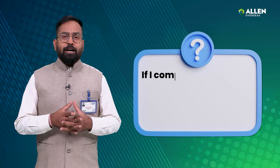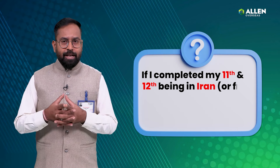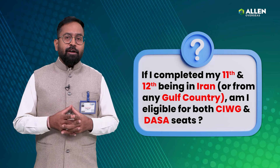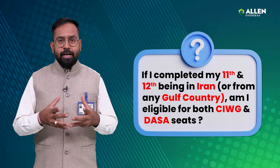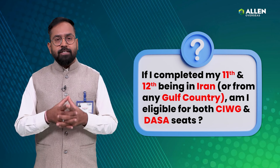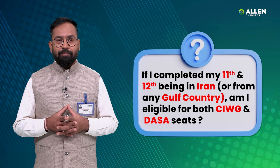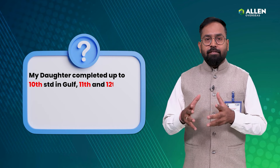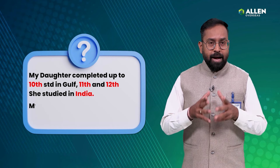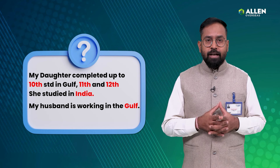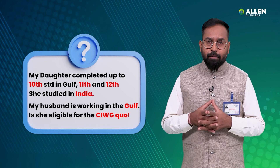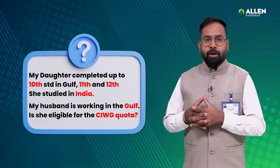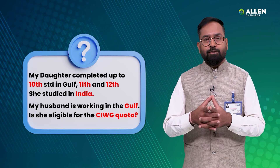Next question: I completed my 11th and 12th in Iran — am I eligible for both CIWG and DASA seats? If you have completed your 11th and 12th in Iran, you are eligible for both CIWG and DASA seats under the DASA scheme. Another question: my daughter completed up to 10th standard in the Gulf and 11th and 12th in India; my husband is working in one of the Gulf countries — is she eligible for the CIWG quota? As she has not completed her 11th and 12th from the Gulf, she is not eligible for the CIWG quota.